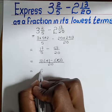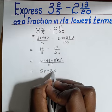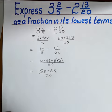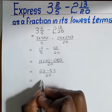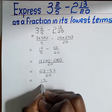17 times 4 equals 68, minus 53 over 20. 68 minus 53 equals 15 over 20.